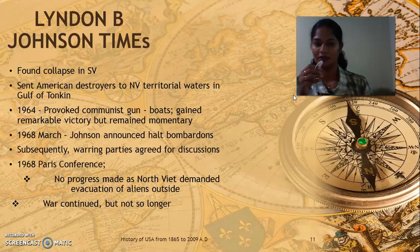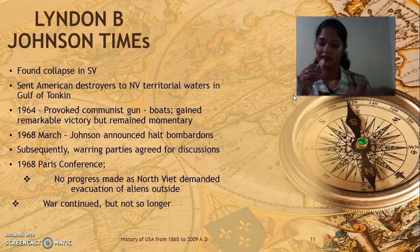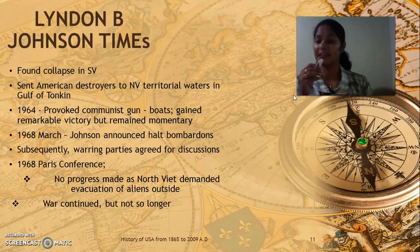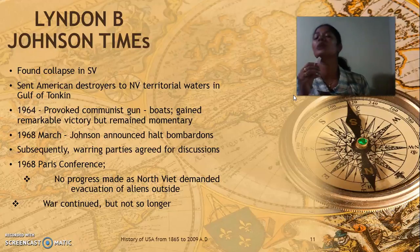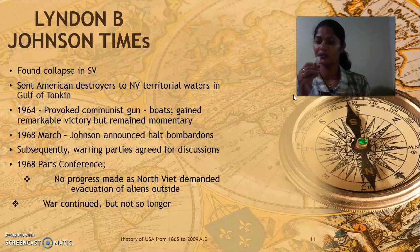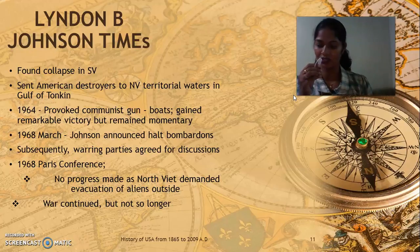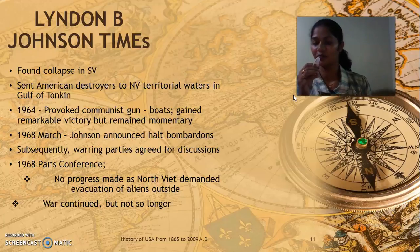During Johnson's period, only a transition of leader occurred and a new leader came to power, but again there was political chaos in South Vietnam. So Lyndon B. Johnson sent American destroyers — warships — to North Vietnam's territorial waters in the Gulf of Tonkin. In retaliation in 1964, there was a provocation of communist gunboats. The communist attack over the American boats gained a remarkable but momentary victory.